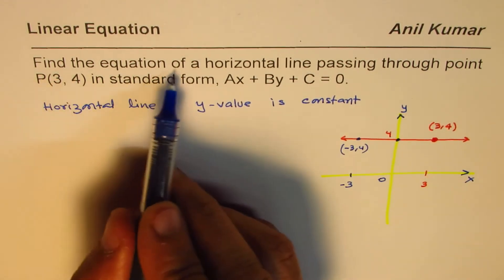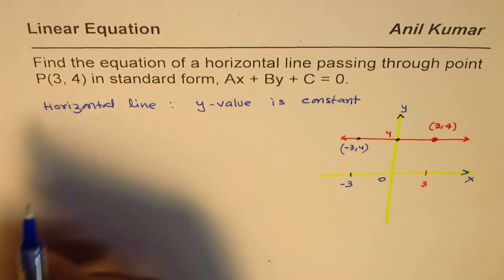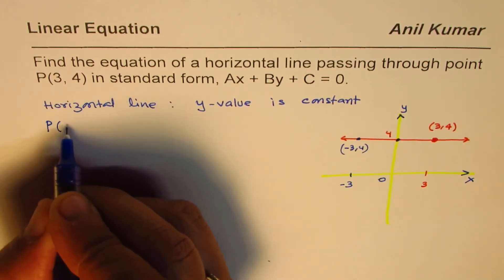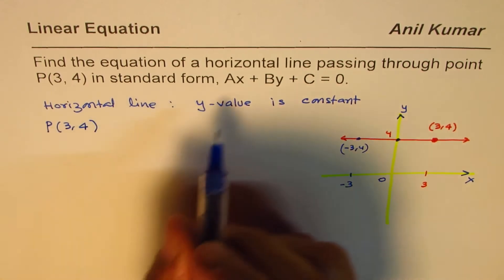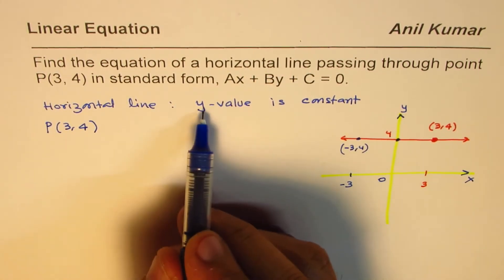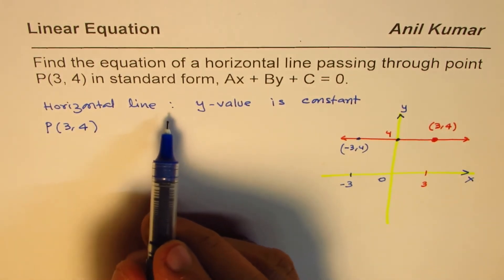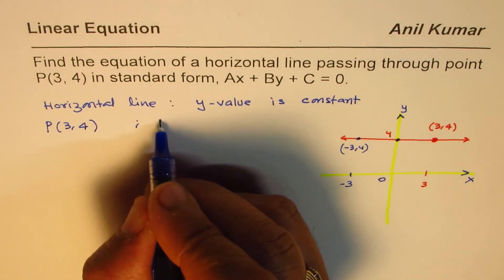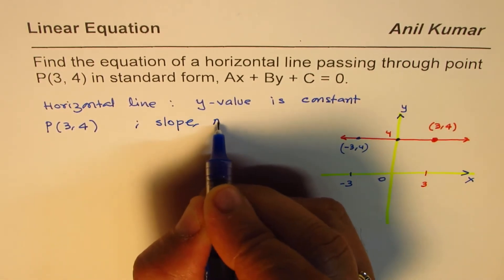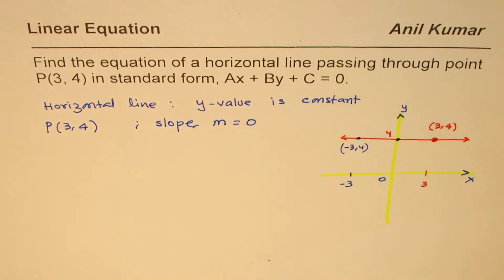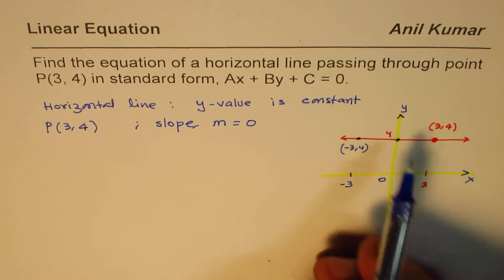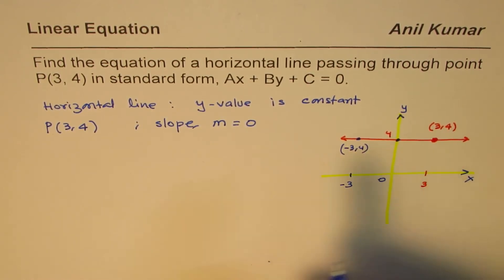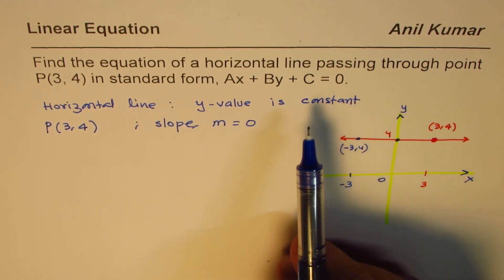The question asks for the equation of a horizontal line passing through point P(3,4), and it also passes through (3,4). Horizontal line means y value is constant, and it also means the slope is equal to zero. For any horizontal line, slope m equals zero. Since y value is constant, change in y is zero, therefore the slope is zero.